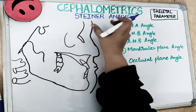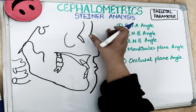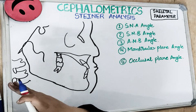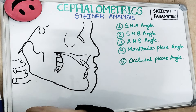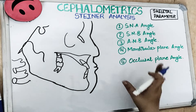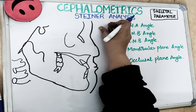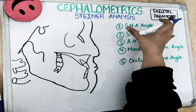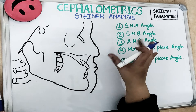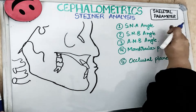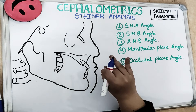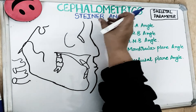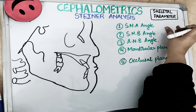C. Steiner developed this analysis in 1930 with the idea of using a minimal number of measurements. You have studied Downs Analysis in the previous video — there were a lot of calculations and numerical values. Steiner used the least number of measurements and provided a maximum amount of clinical information. Steiner Analysis is divided into 3 parts: skeletal parameters, dental parameters, and soft tissue analysis.